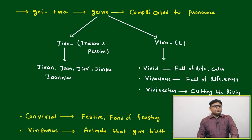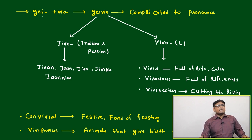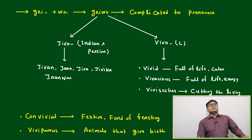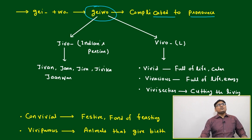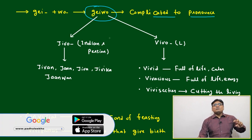We will put some prefix and suffix and make multiple words which are going to be helpful for our vocabulary. That is G plus O, that is Zeebo — but it is complicated to pronounce. In any area of the world, it is complicated to pronounce. Zeebo — it will always be a tongue twister.